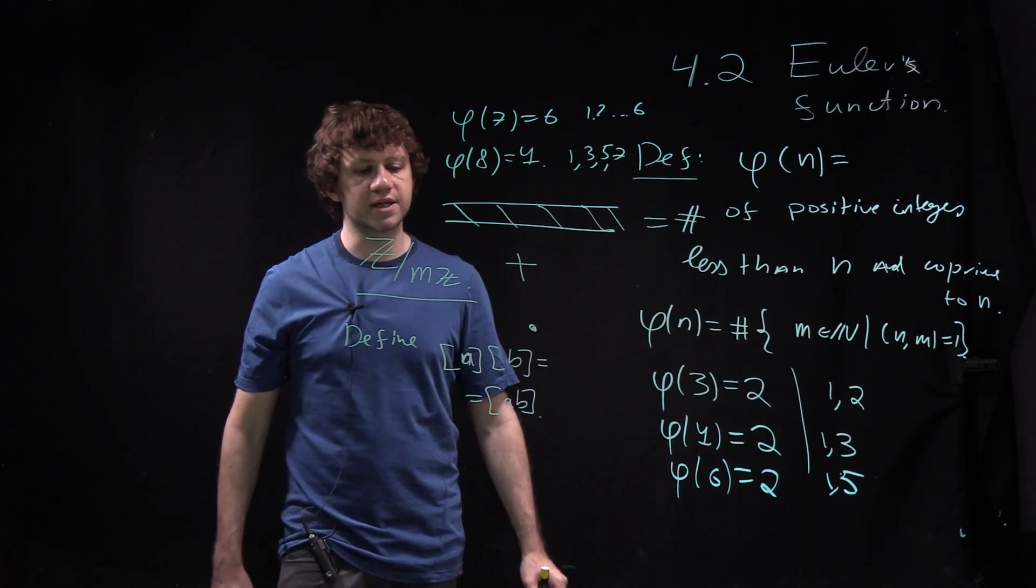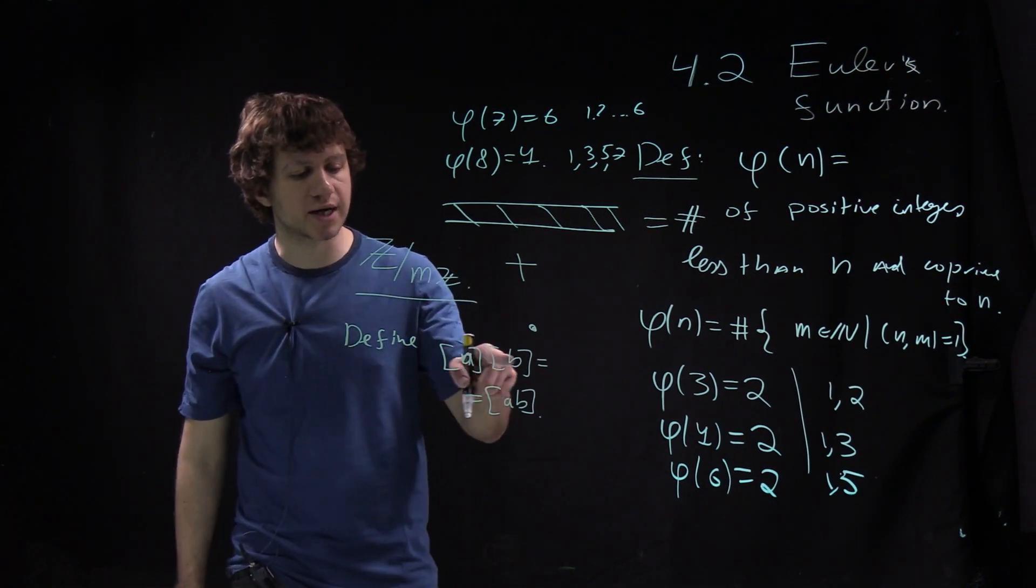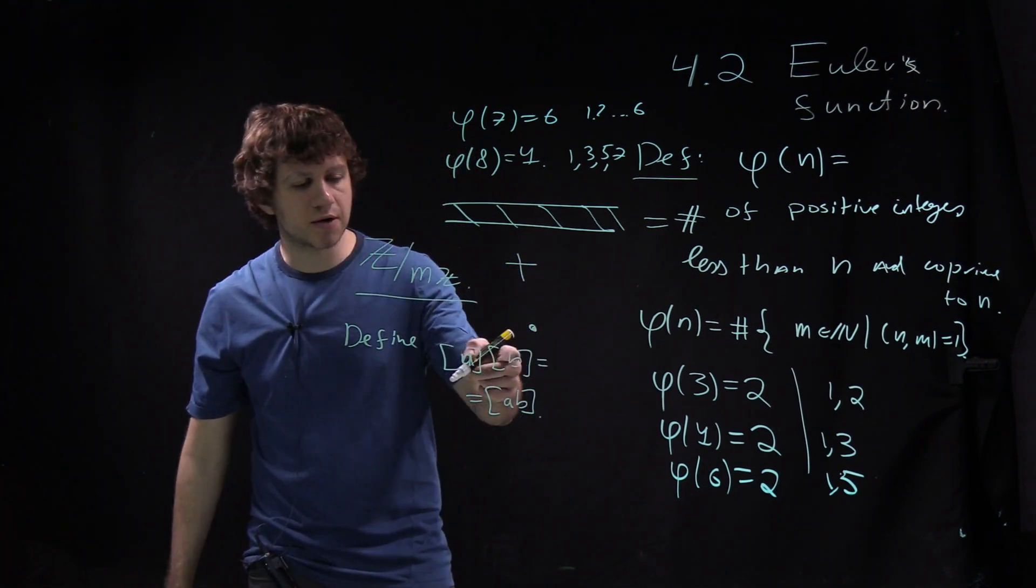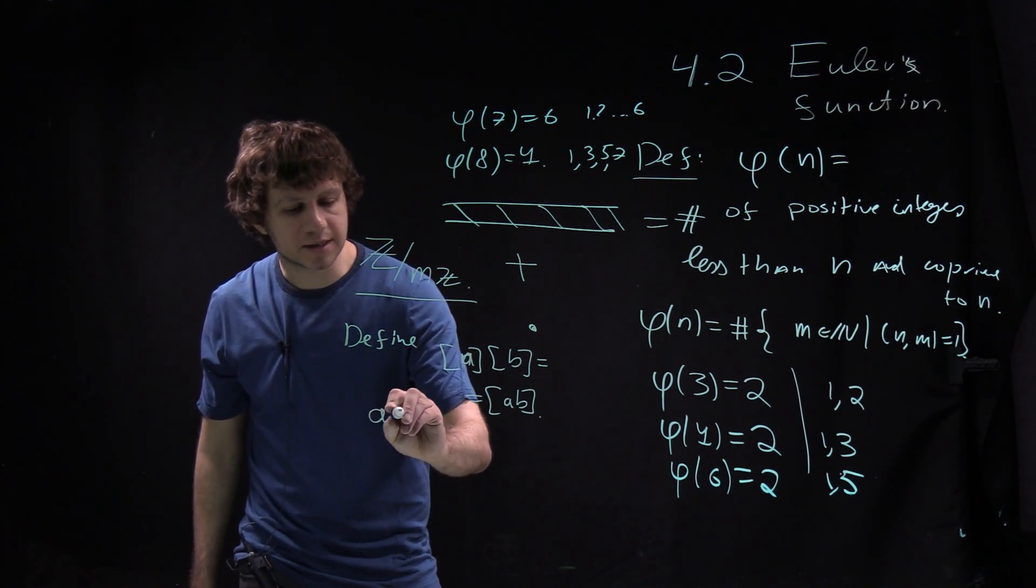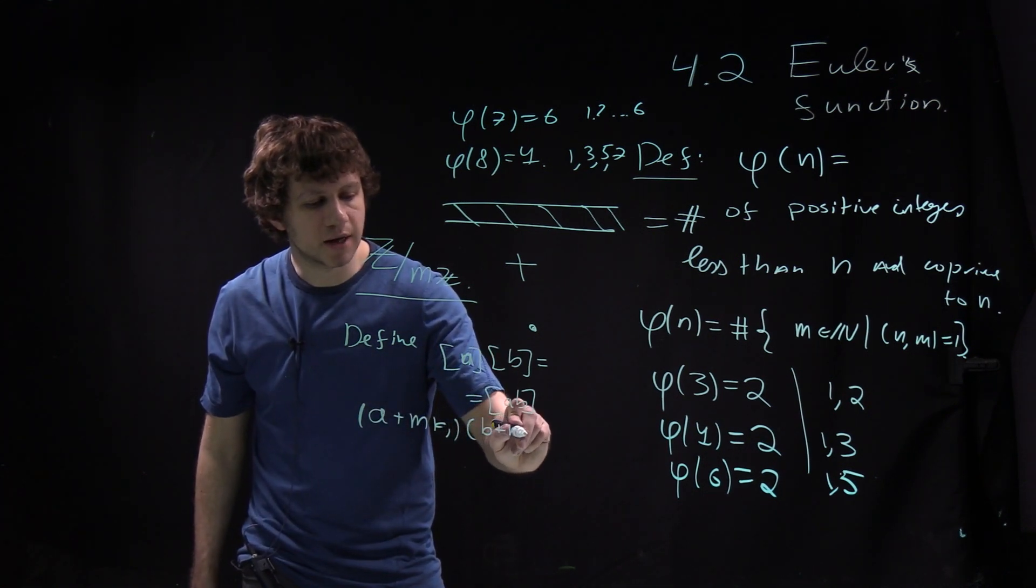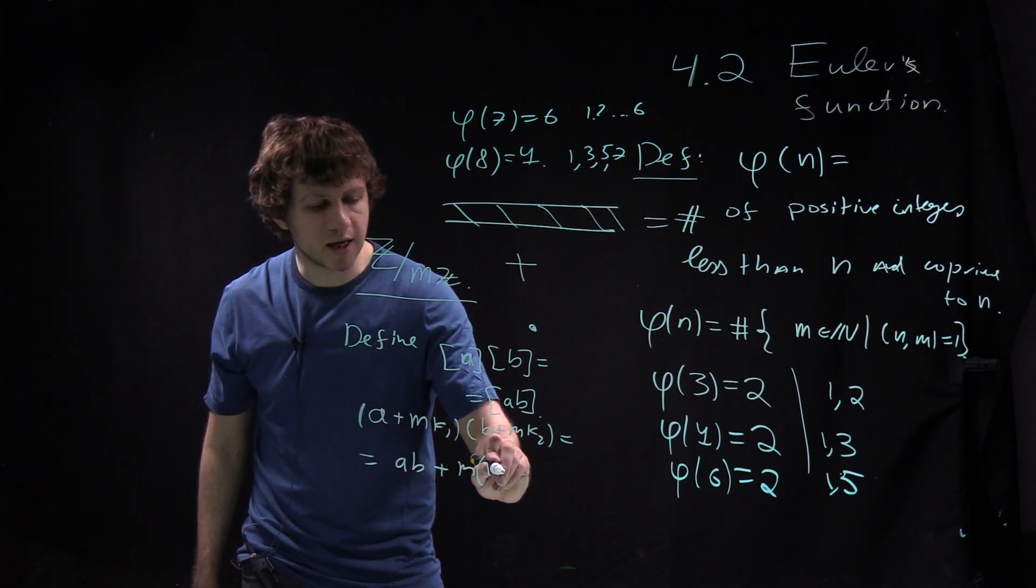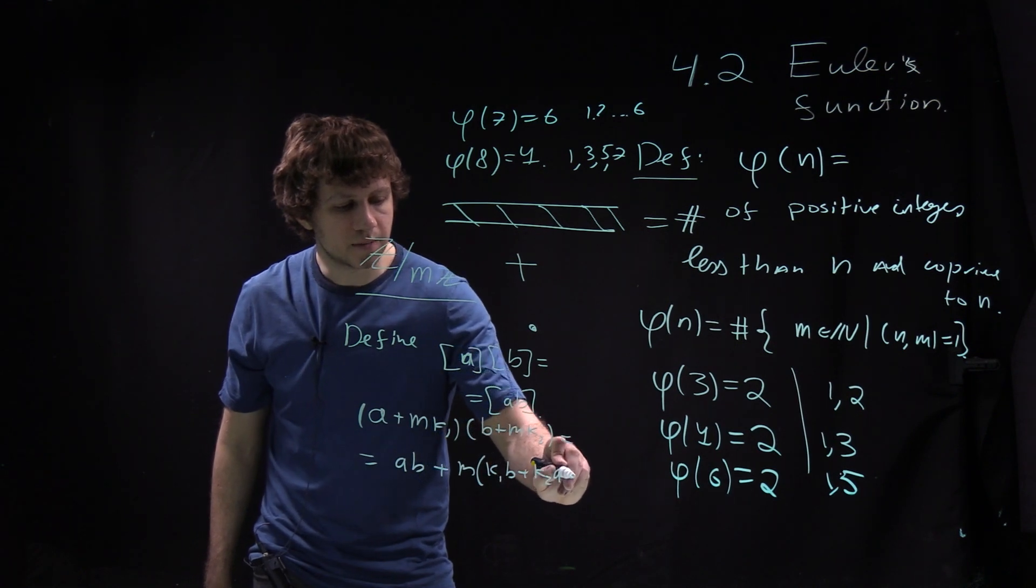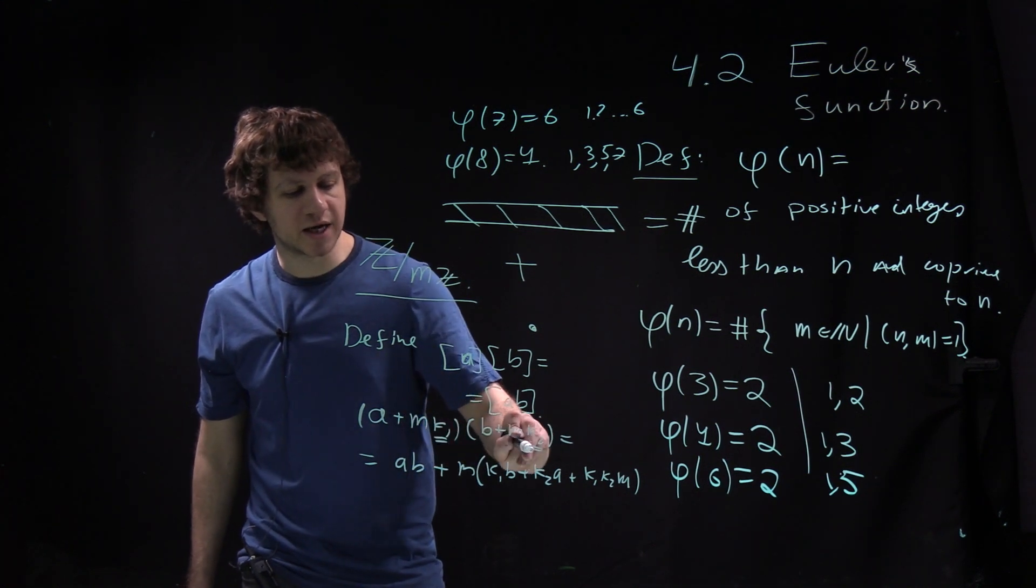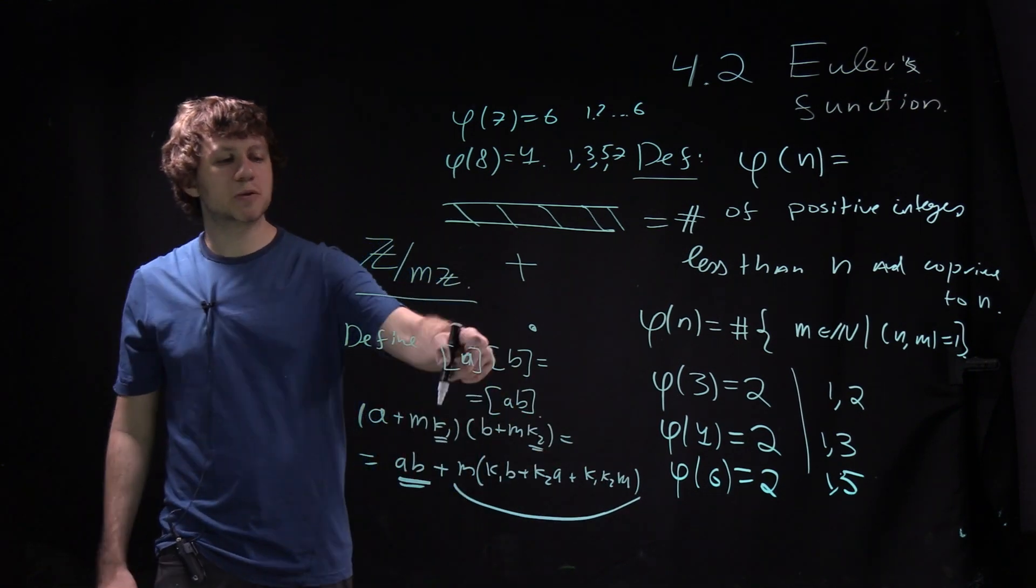Define the product of two classes A and B by the rule class of A times class of B equals class of AB. That's not particularly obvious that this is well defined because you need to check it doesn't depend on the choice of representatives. If you write down every element as A plus MK1 and multiply it by B plus MK2, when you multiply you get AB plus M times K1B plus K2A plus K1K2M. You see that no matter what K1 and K2 are, the remainder modulo M does not depend on that.